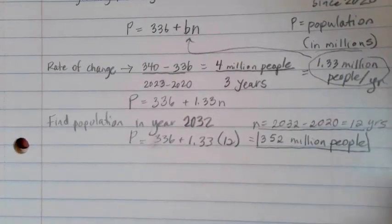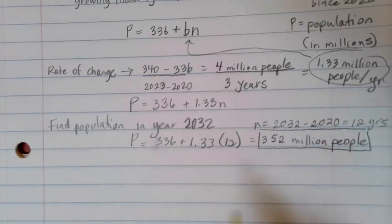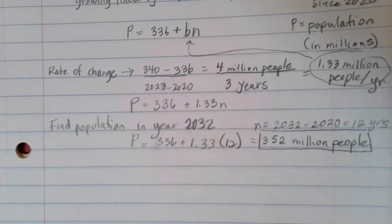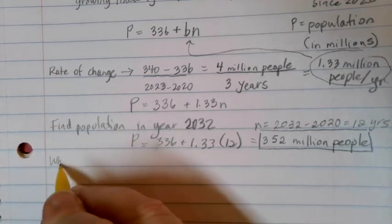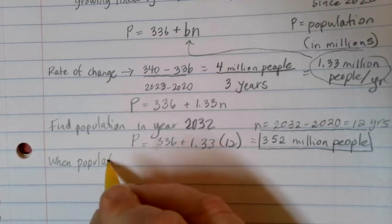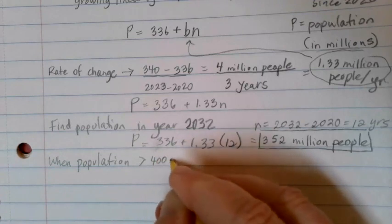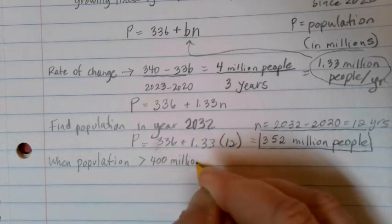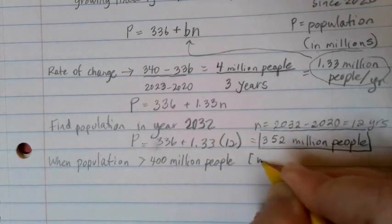Don't forget to use whatever units it is that you were defining things in. Okay, we can also try to look out for certain numbers. So let's say, for example, I want to know when my population of the U.S. is going to be bigger than 400 million people. What year?